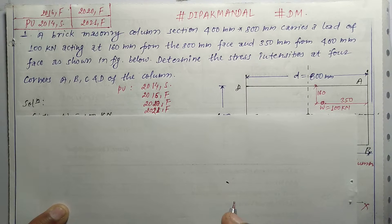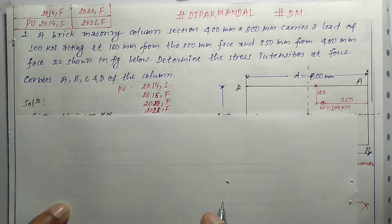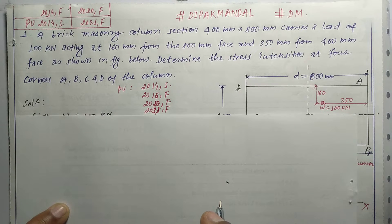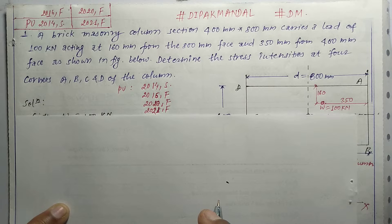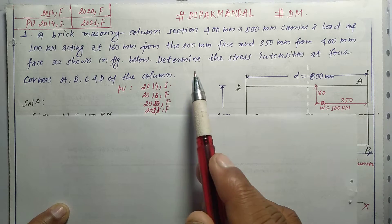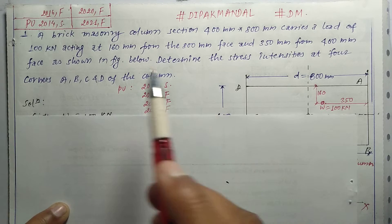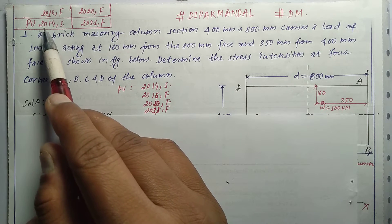Hello everybody, welcome back. This is Deepak Mandal and today we are going to see the numerical on a masonry column subject to eccentric load — the eccentric load design. This is the first time we are going to see a column which is a masonry column in the corner. We will see the numerical level.